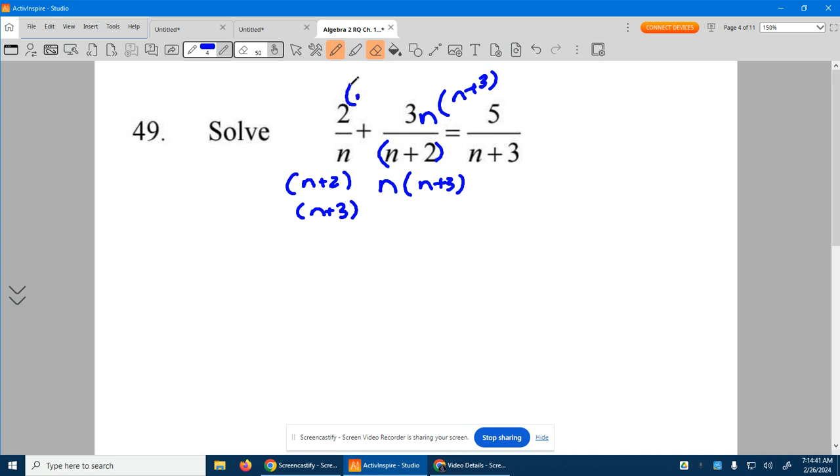So this 2 gets an n plus 2 and an n plus 3. And finally, this n plus 3. He needs an n plus 2, so the 5's going to get an n plus 2. And it also needs an n, so it's also going to get an n.